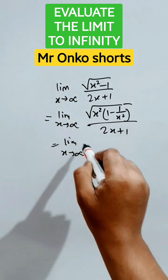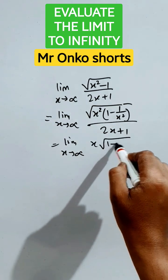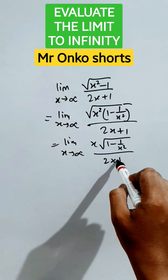Outside it will be x, that is root over of 1 minus 1 by x square by 2x plus 1.